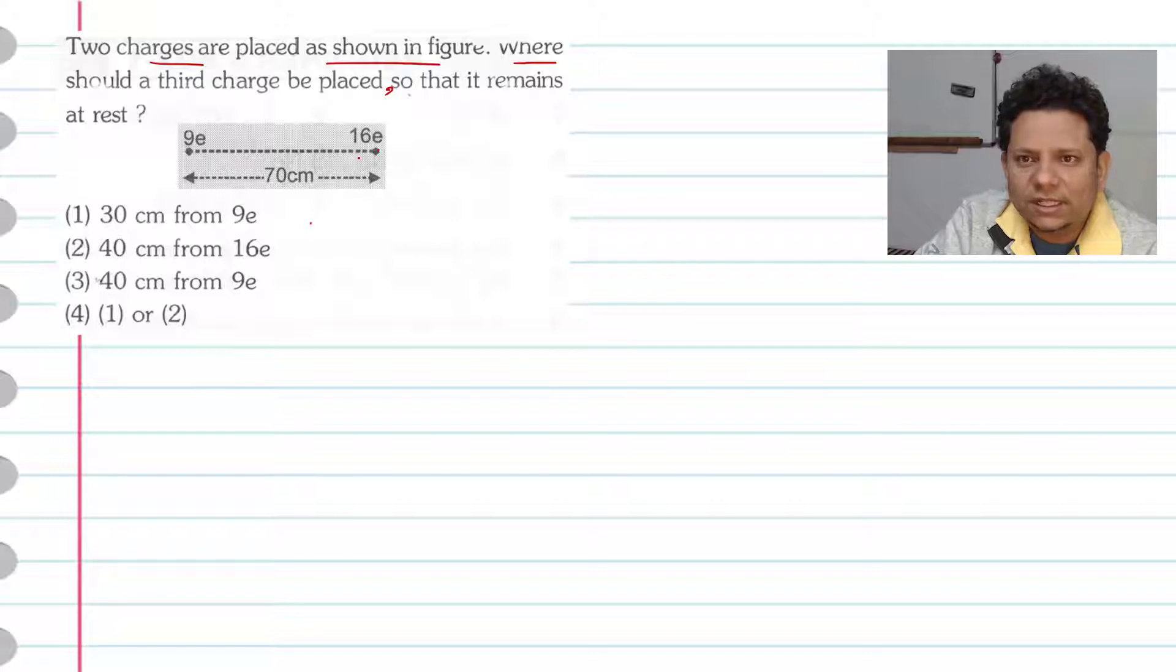So, 9E and 16E charges are here, 70 cm distance. Options are: 30 cm from 9E, 40 cm from 16E, 40 cm from 9E, or options 1 or 2. Now the scenario is, if you have